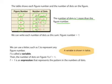We can write each number of dots as this sum, so it's figure number plus 1 is really our rule, figure number plus 1. We can use a letter, such as F, to represent figure number. When we use a letter, it's called a variable, and it stands for any one of these numbers in this column, any figure number. And figure number plus 1 would be the expression.